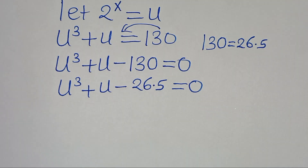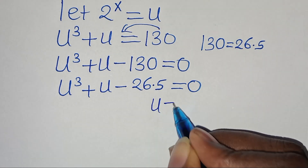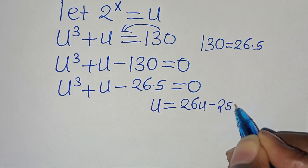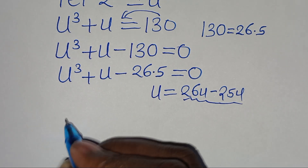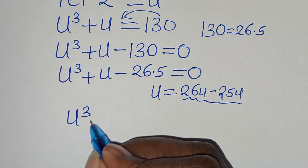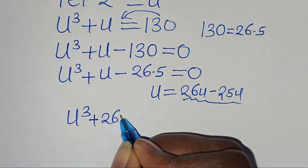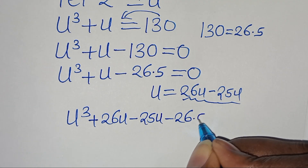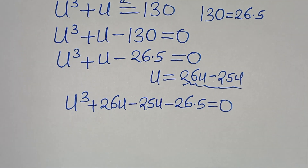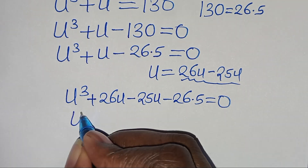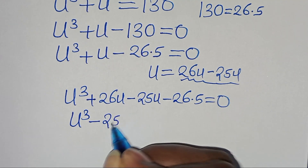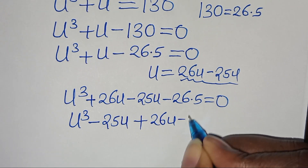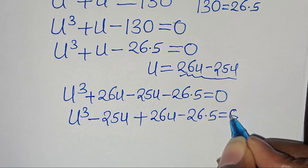From here, we can express u as 26u subtract 25u. Substituting this, we have u cubed plus 26u minus 25u minus 26 times 5, equal to 0. Rearranging, we have u cubed minus 25u plus 26u minus 26 times 5, equal to 0.